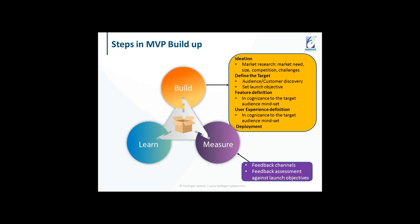Once you have built the product and showcased it with the feedback channels built in, the feedback will come in. You need to assess the feedback against the launch objectives — if people give you e-learning content feedback when you needed portal feedback, it doesn't help. Getting the right feedback is key. Once you've assessed it, you learn from it. Even if the idea is valid, look at positive and negative feedback, adjust the product roadmap, and continue iterative development — because MVP is something you can build on top of, using the same source code for the final portal version.